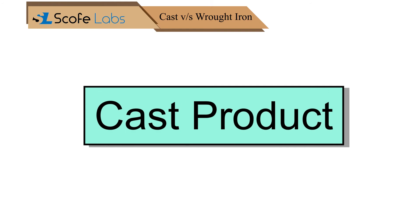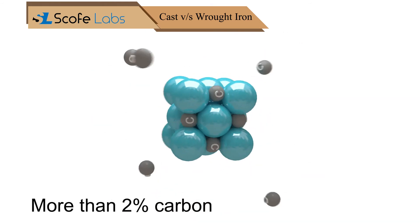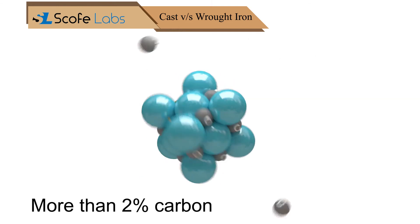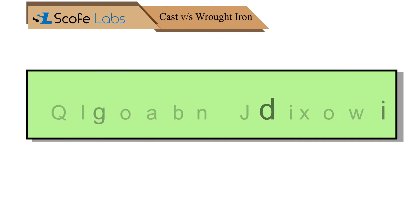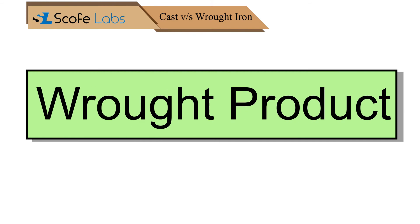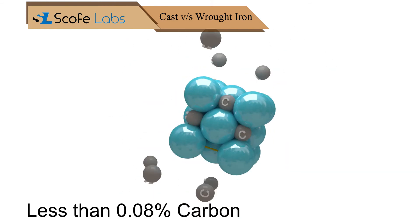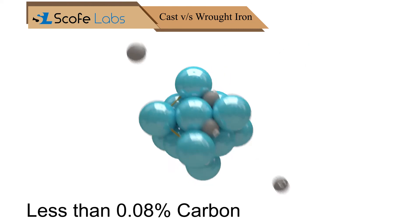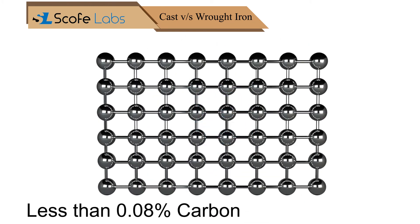In cast products, the percentage of carbon is more than 2%, hence the cast product is brittle. The percentage of carbon in the wrought product is less than 0.08%, and it has high strength.